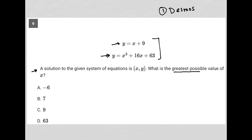Without showing you Desmos here, another way to solve this is by substitution. I know that y is x plus 9, so I can take that x plus 9 and plug it into this y down here, leaving me with x plus 9 equals x squared plus 16x plus 63.